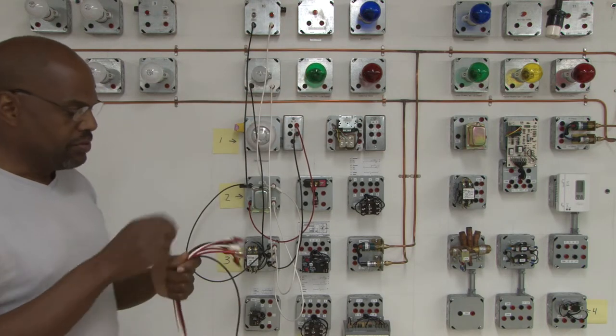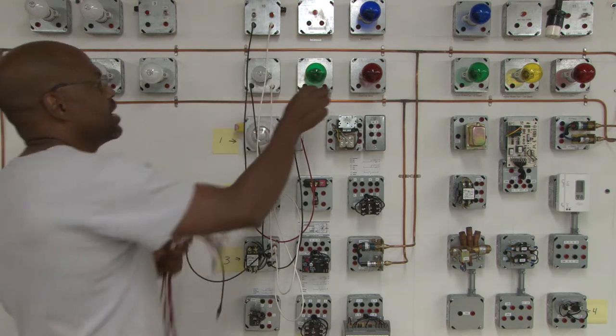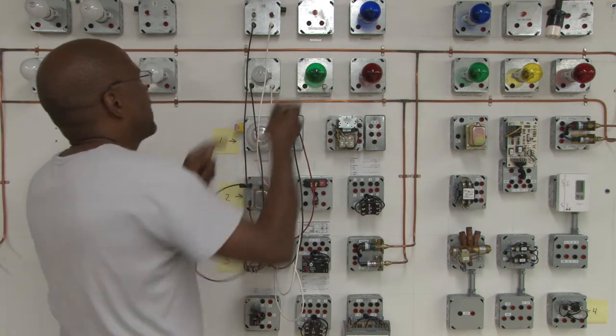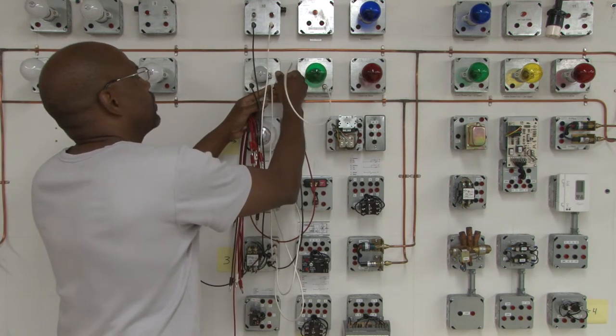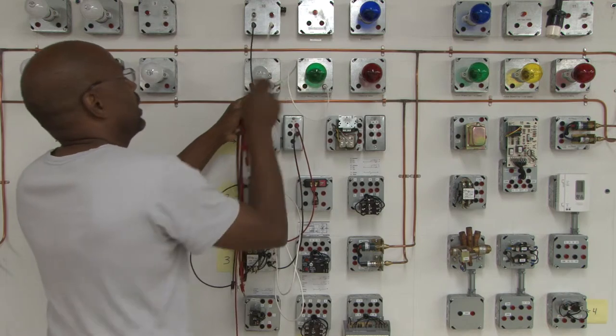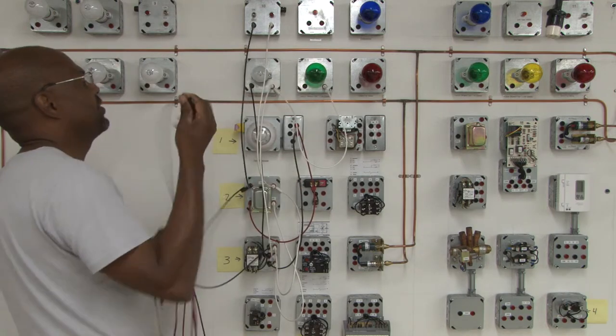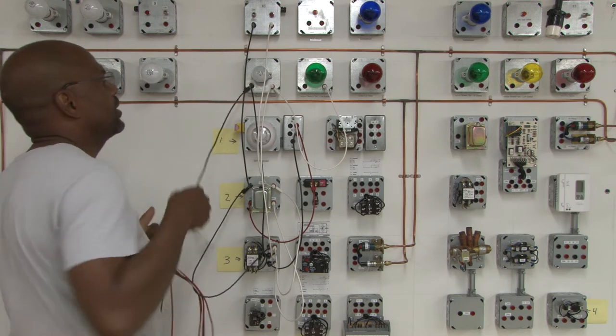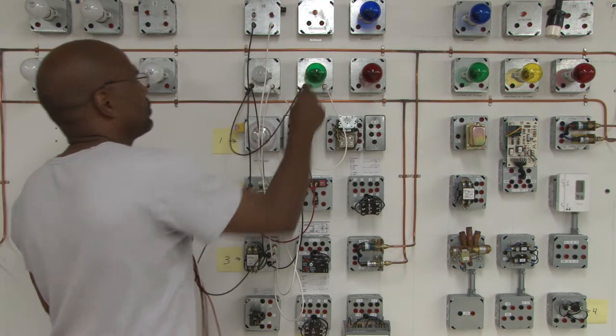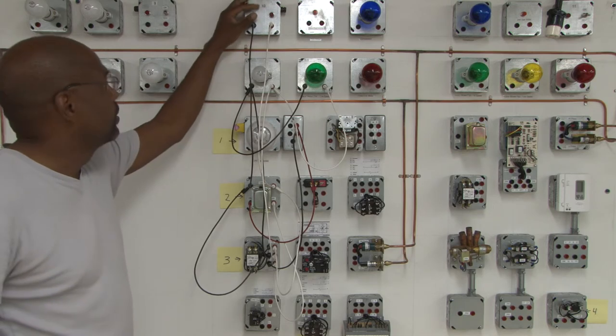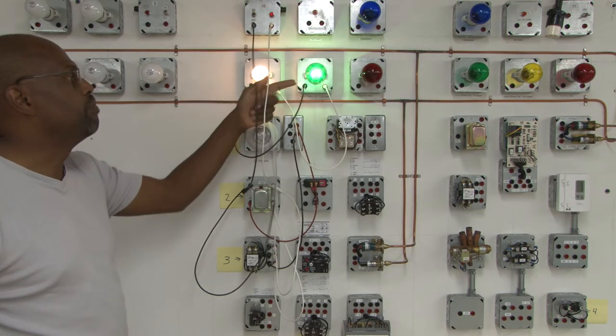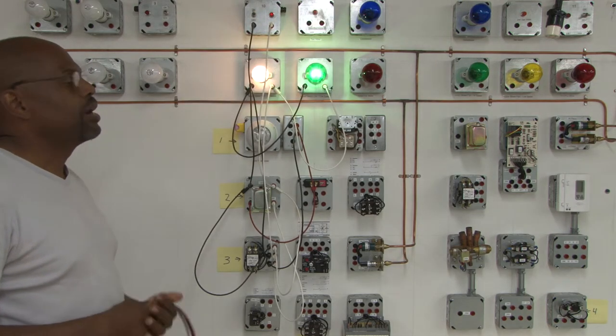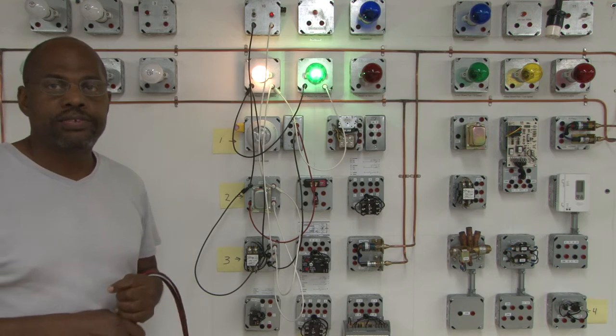So if I turn this off and wire in the condenser fan motor in parallel to the compressor, both devices will operate at the same time. So I'm going to wire this in parallel. I'm going to flip it back on and you see both will become energized at the same time.